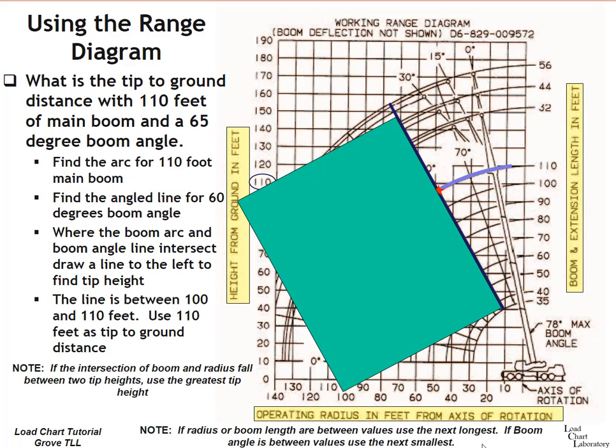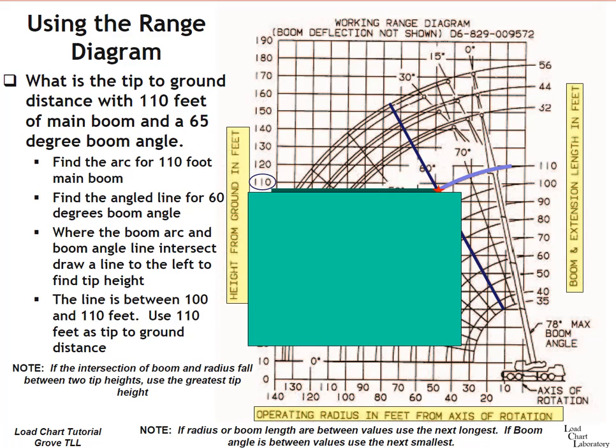You can also use the straight edge or your scrap paper as a straight edge for this type of situation as well. Just line up the edge of your paper along with the diagonal line for 60 degrees. Rotate it around and the edge of your paper, follow that edge over to the left. This edge here, follow that over to the left. It ends up just below 110 or between 100 and 110. And we're going to use 110 as our tip to ground distance or tip height.